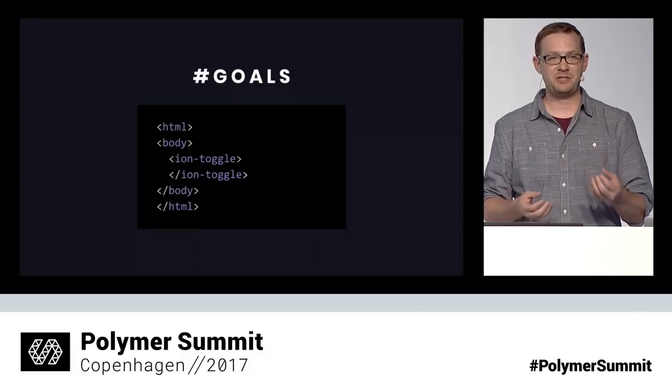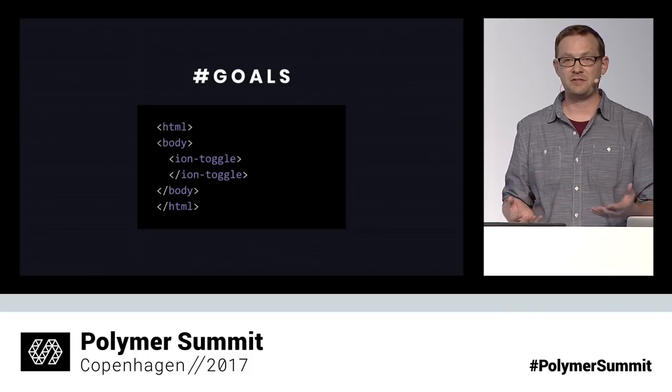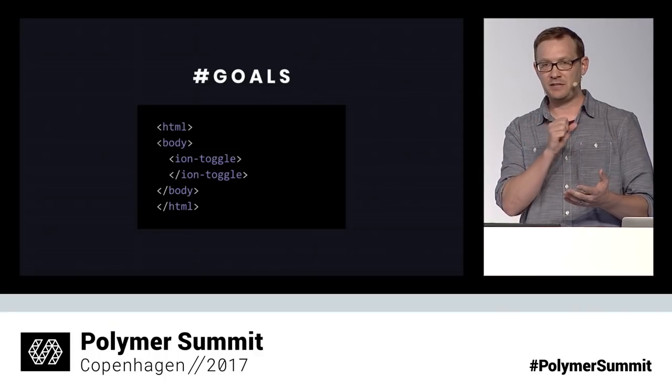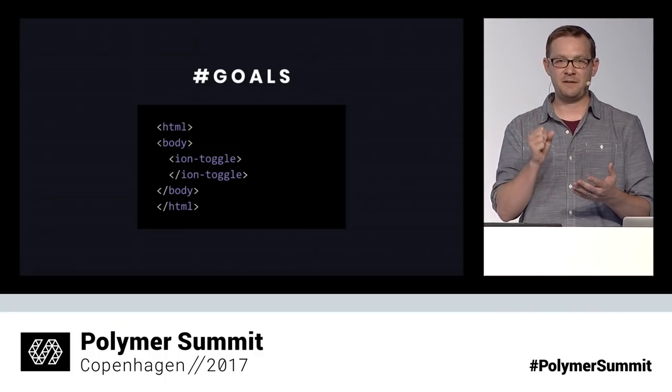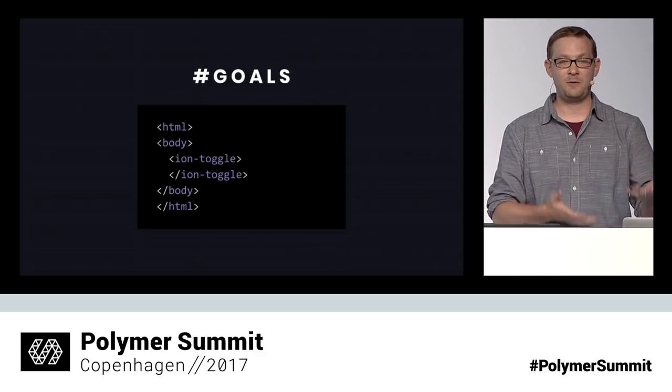We want to go over a brief history of how we got here today and the decisions we made. Our original goal, going way back to when we first started, was to let developers focus on building their applications and not so much the details. We want to enable developers to just add a toggle — not worry about how a toggle works, how to add gestures, what happens at the boundaries — but rather just say, I want a toggle here because I'm focused on my own app.